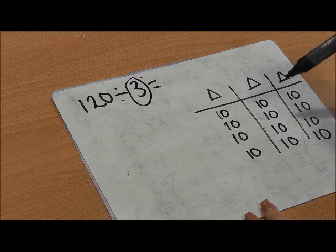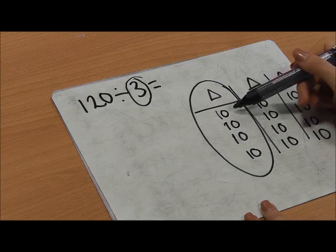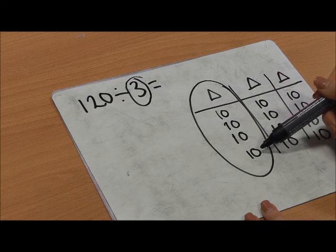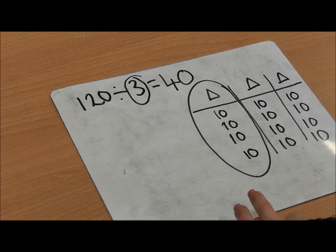To find the total, I'm going to count one array. 10, 20, 30, 40. 120 divided by 3 equals 40.